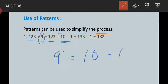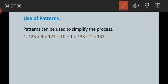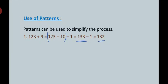It is easier to add 10 or subtract 1 compared to adding 9 directly. I have converted 9 as 10 minus 1. Using the associative property, 123 plus 10 becomes 133. Then 133 minus 1 is 132. Now come to the second example.